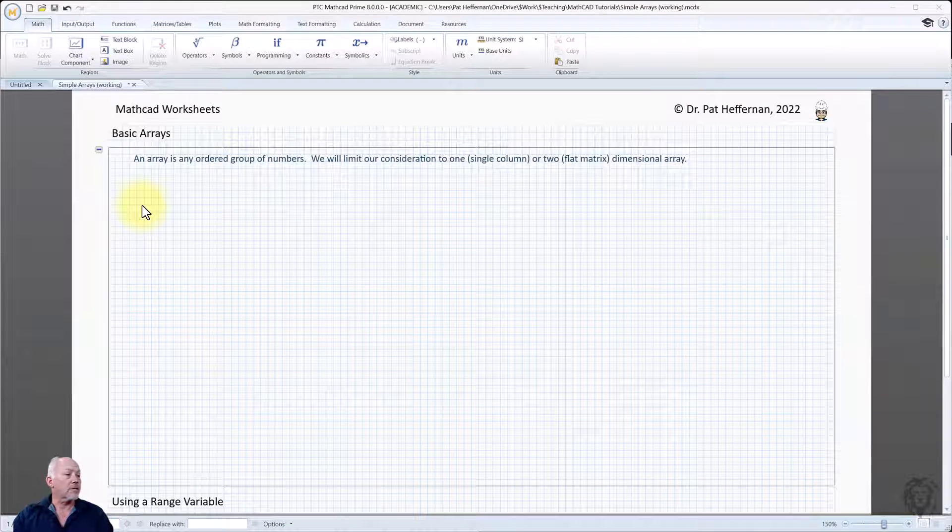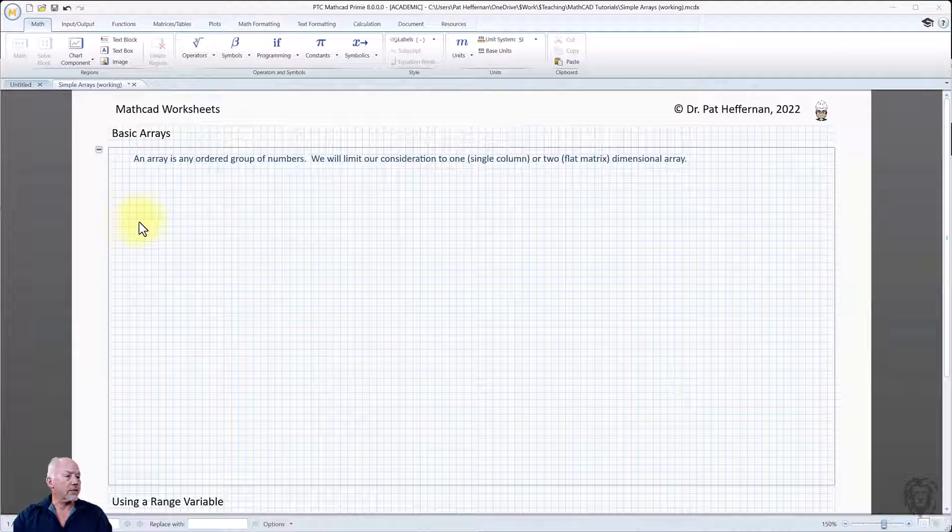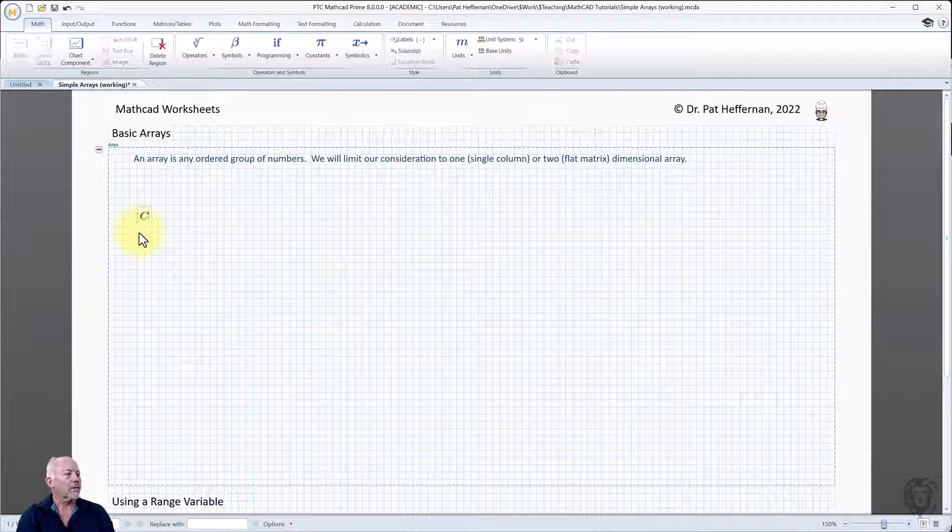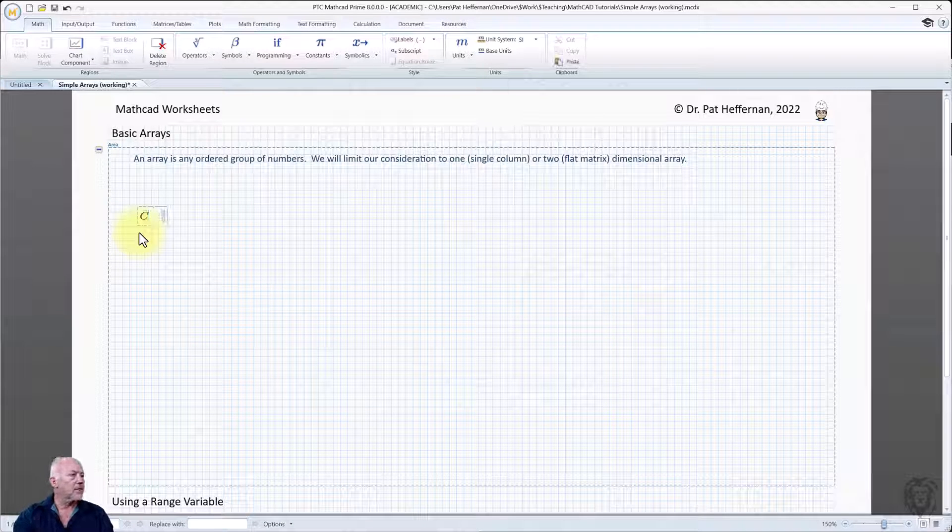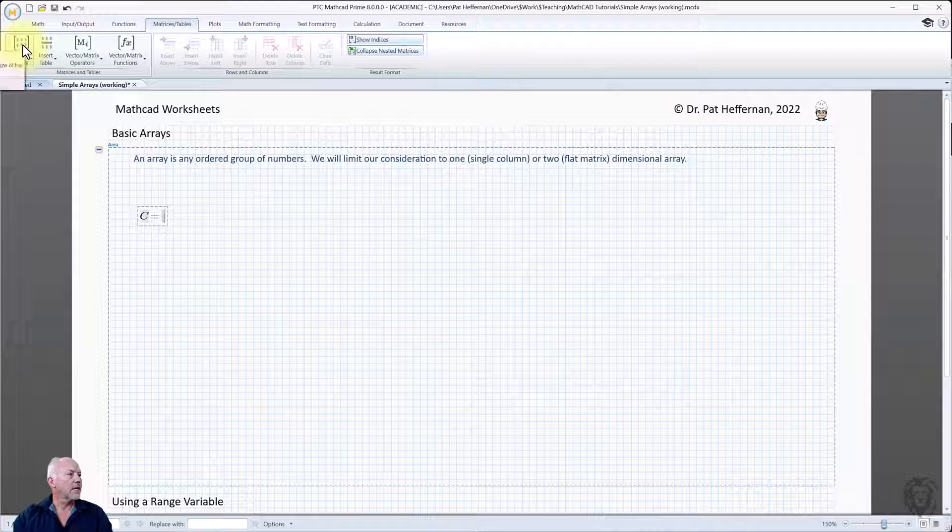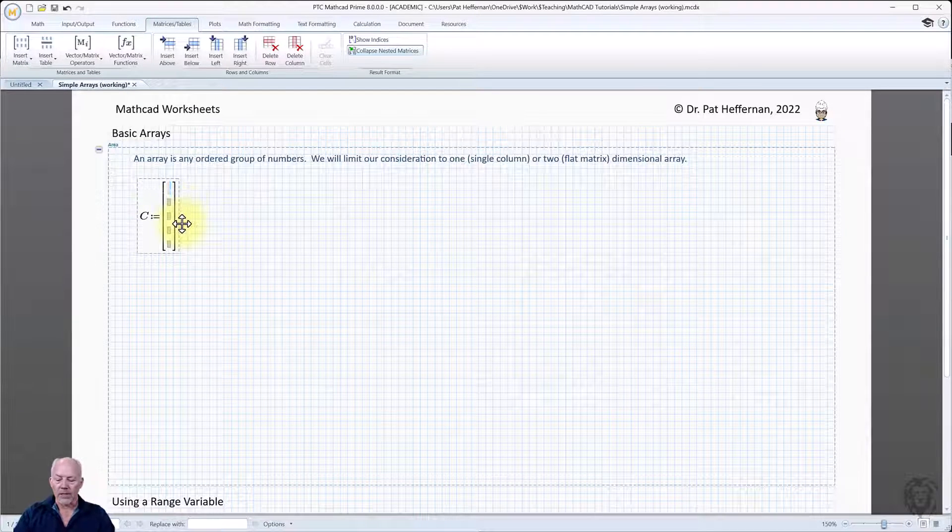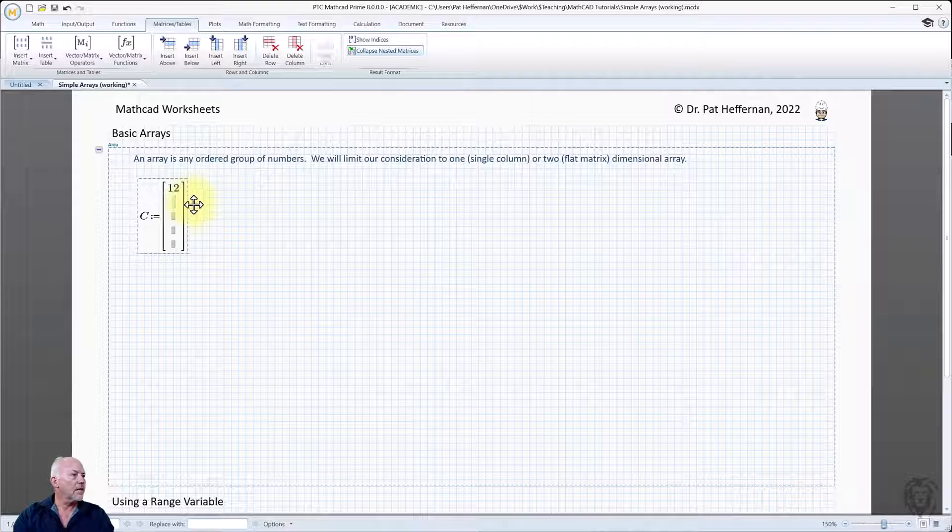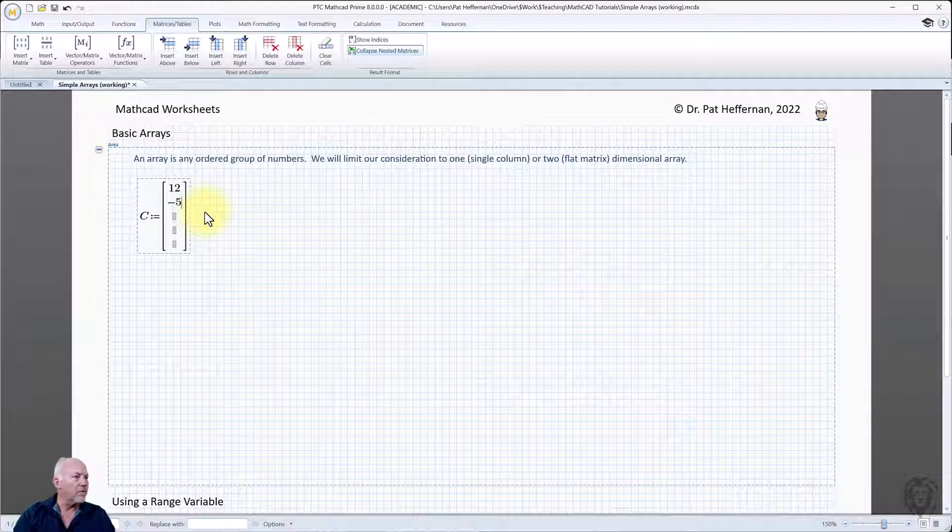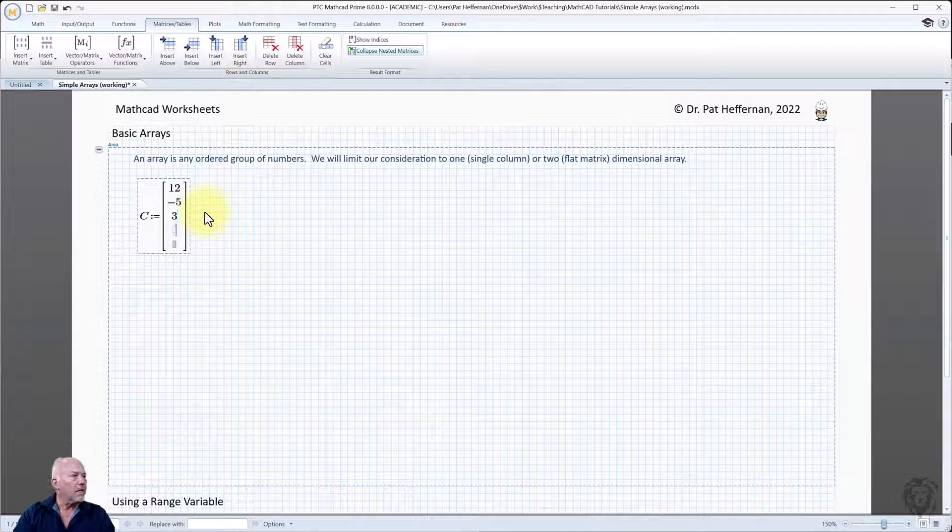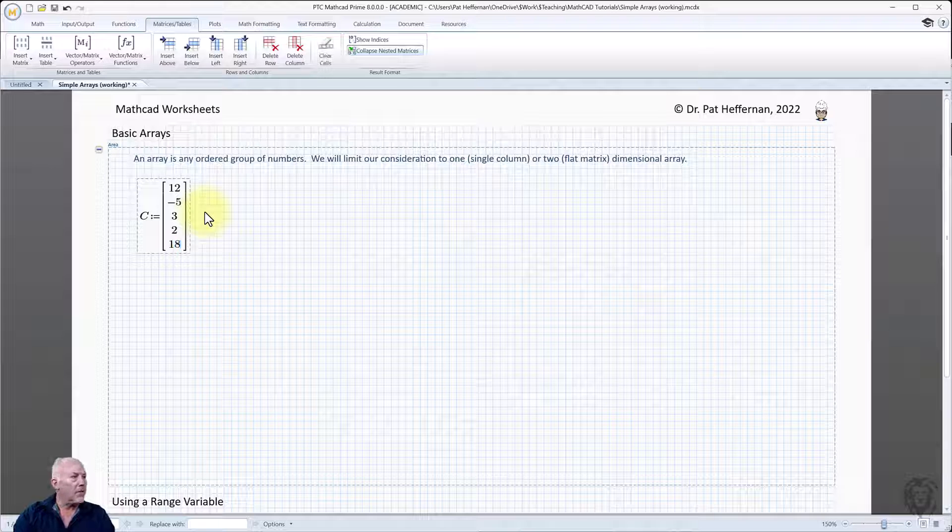To get started, I'm just going to create a column matrix here so that we have something to work with. We go C is equal to, by definition, and then we're going to go up to matrices and tables, insert matrix. In this case, we're just going to do a five by one. I'm just going to create a random set of numbers here, using my tab button to move between the various cells.